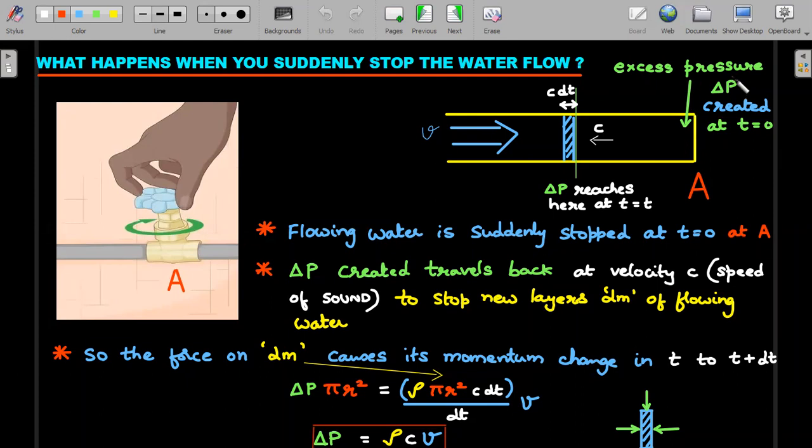The dm elements or the layers of water which were originally moving with velocity v here would suddenly get stopped at t = 0. Due to this sudden stoppage, you can assume that there is an excess pressure ΔP that would be created here. This ΔP information will travel backwards like a sound wave. Remember, excess pressure in any bulk travels as a sound wave back in the direction from where the pipe is.